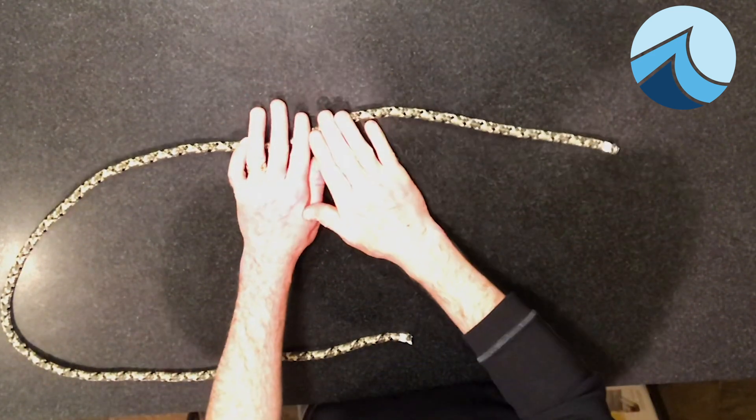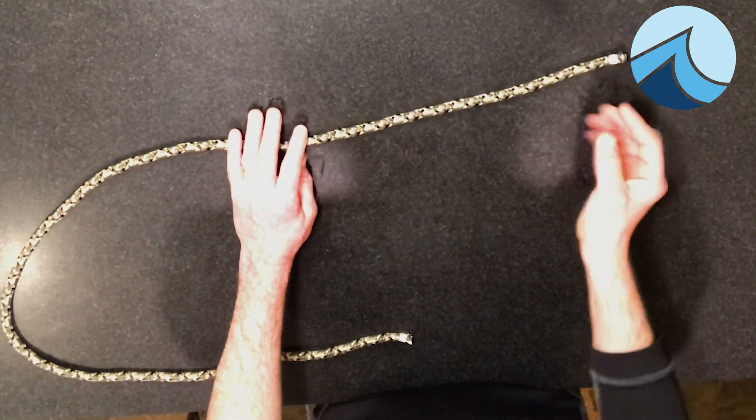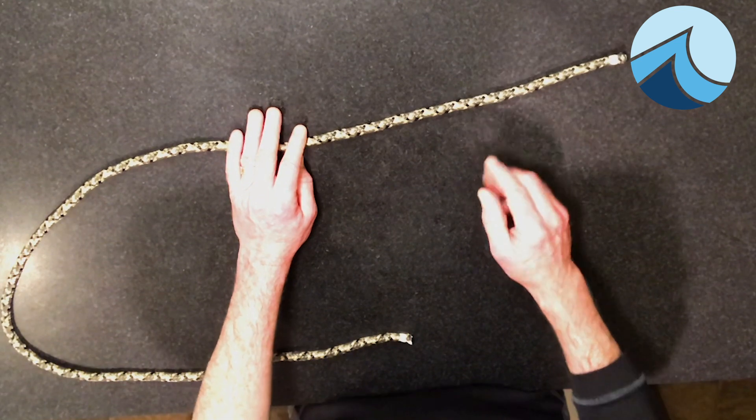The first knot we're going to tie is a knot that you use in the end of a line, and it's called the figure eight knot. So here's our end of the line.